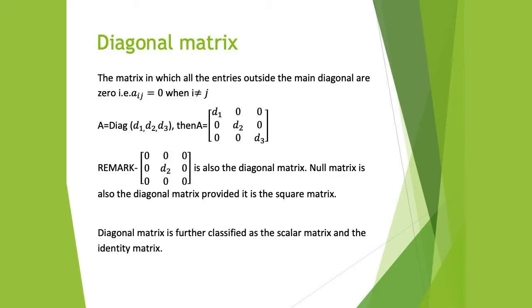What did we do in the last video? We said that the main diagonal — for example, I have taken d1, d2, d3 — this is the main diagonal for this matrix. Main diagonal is also called the principal diagonal. In this matrix, leaving aside the principal diagonal, all the remaining elements are 0. So this is the diagonal matrix in which all elements outside the main diagonal are 0.